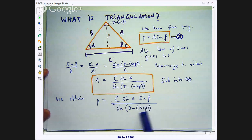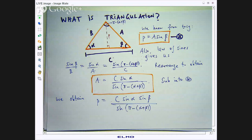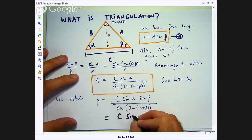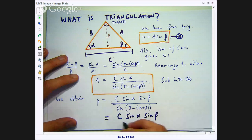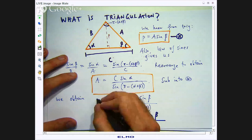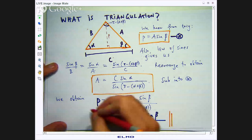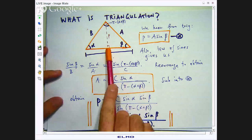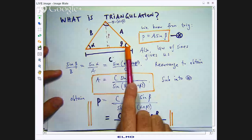Now this bottom bit can be cleaned up a bit. Because sin is a periodic and odd function, I can actually simplify the denominator here to the following. So this then is the mathematical derivation for triangulation to find this length here, given this length and these two angles.